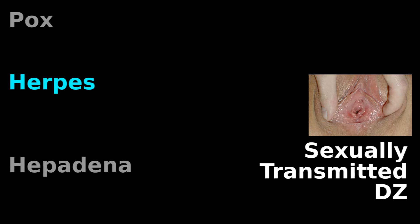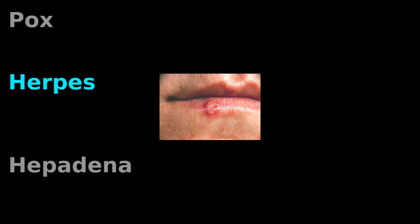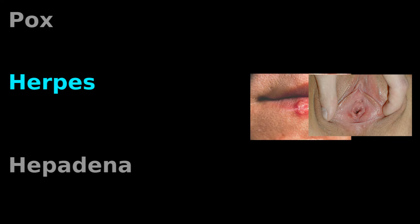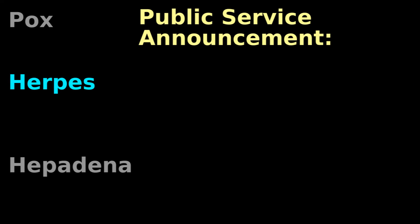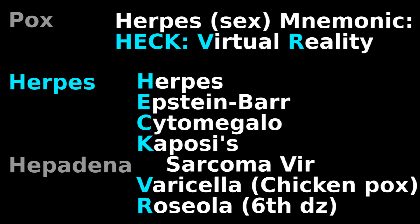Everyone knows herpes as a sexually transmitted disease. However, the more common herpes, HSV-1, primarily causes oral sores. But if your oral sores touch genitals, then your oral HSV-1 can transfer to your partner's genitals. Public service announcement: don't give oral-genital pleasure when you have oral sores.